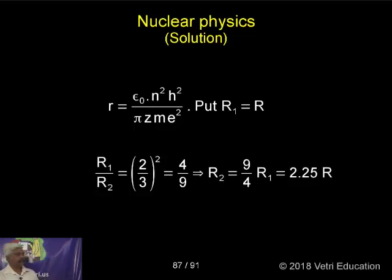Therefore, 4 by 9. Therefore, R2 equal to 9 by 4 into R1. That is 2.25 R.